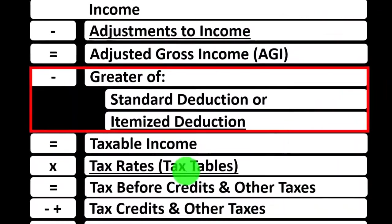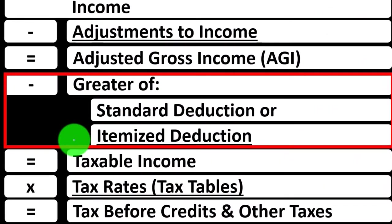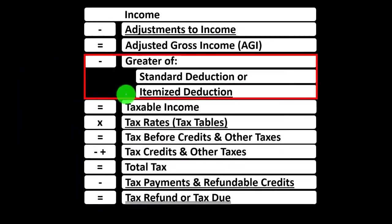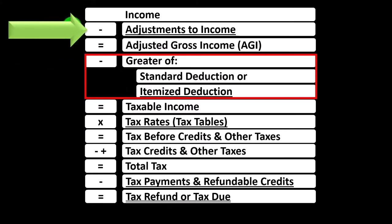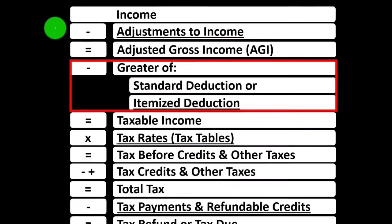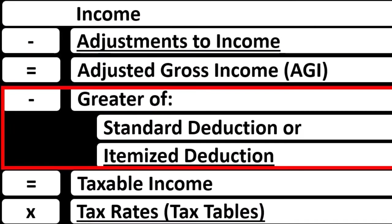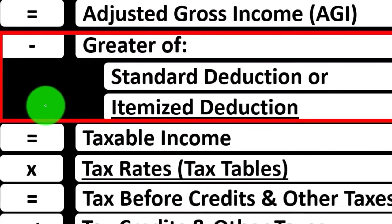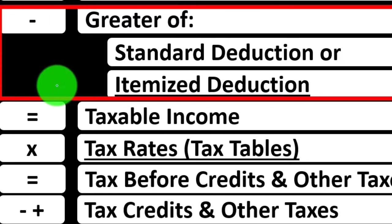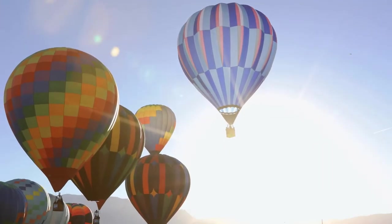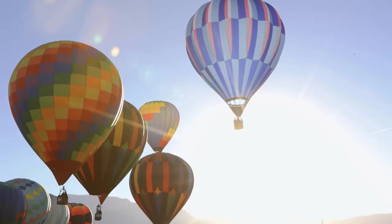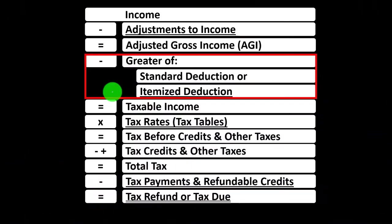The income tax formula is focused on the itemized deductions, keeping them distinct in our mind from the adjustments to income — the above-the-line deductions, the deductions for AGI, or the Schedule 1 deductions. Also noting that itemized deductions generally need to be higher than the standard deduction in order for them to be beneficial.